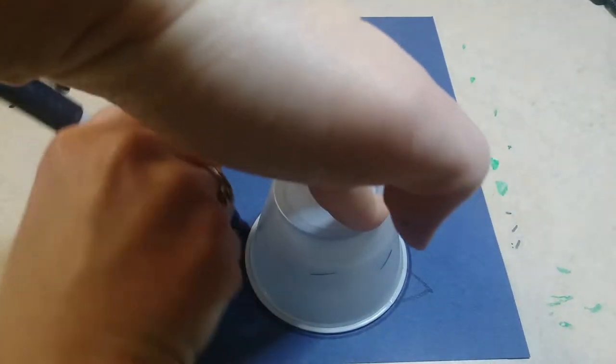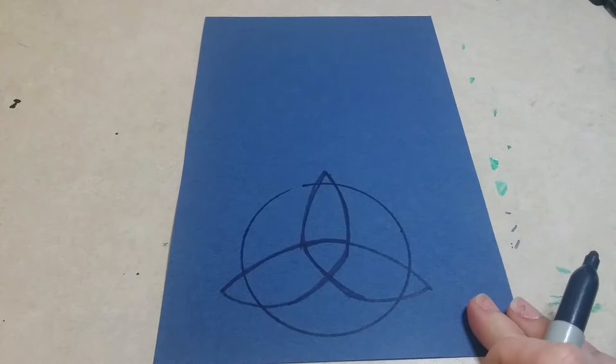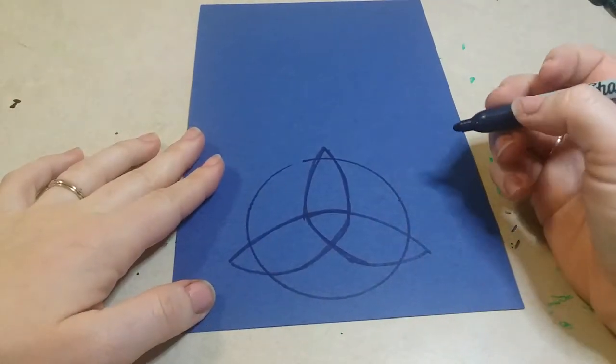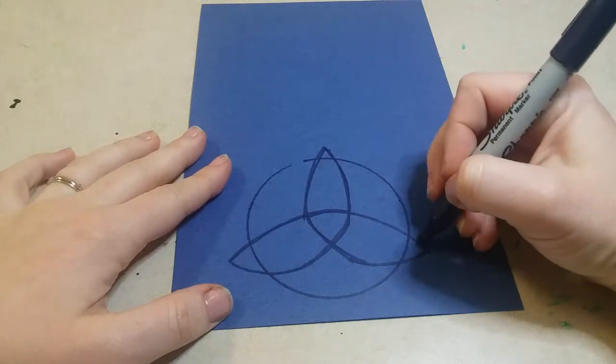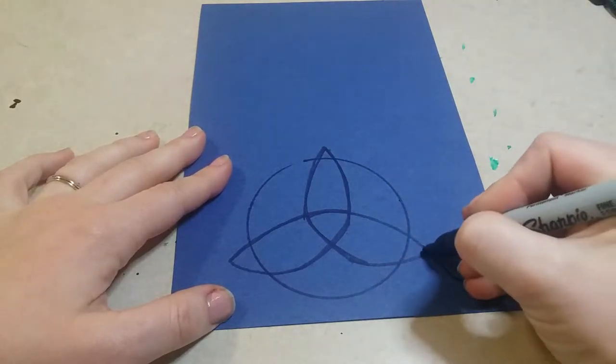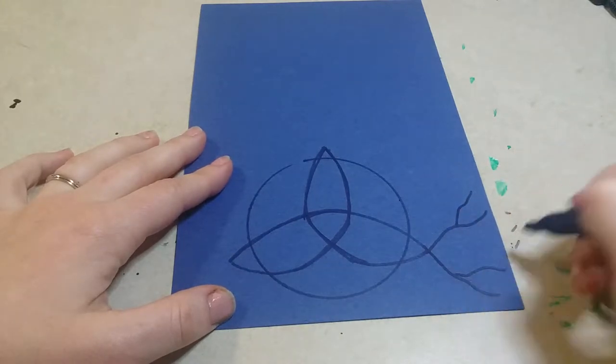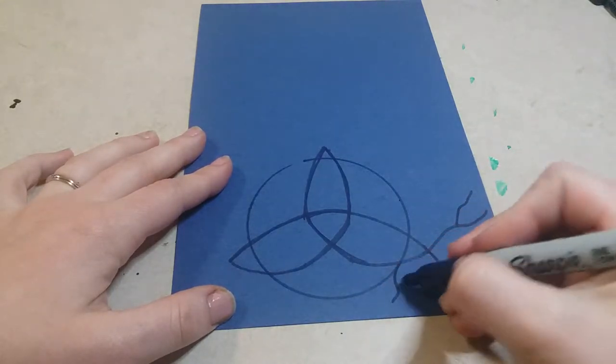Once you have that, you are going to start with the roots of the tree. So you're gonna extend some of these lines here that cross over and you're gonna make them like wavy. Each line you're gonna turn into like a wavy Y.